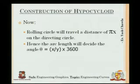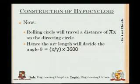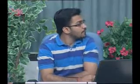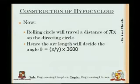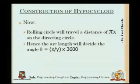This is similar to the epicycloid. In epicycloid, it was rolling outside the directing circle; here in hypocycloid, it is rotating inside the directing circle. So again, the arc covered from the point of initiation up to the final point will be up to angle theta. Theta can be calculated by the formula x divided by y into 360°, which equals the angle covered by the whole circumference of the rolling circle.